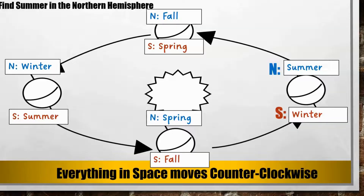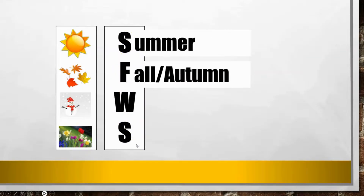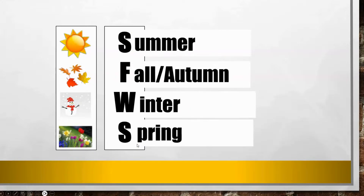On your supplemental aid you are also able to see 'SFWS' and pictures to help you remember the seasons. Whenever you see these, remember the seasons in order: Summer, Fall (or Autumn), Winter, then Spring. If you can remember those in order and continue to find summer in the northern hemisphere first, you should be able to label all of your diagrams. I hope that helps!